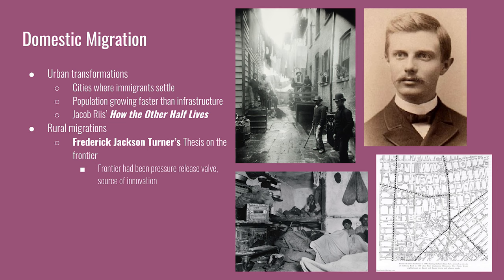Jacob Riis, an early reformer, wrote a book called How the Other Half Lives, which details conditions in the cities. In addition to the text, he includes photographs and illustrations of conditions in New York City. The two pictures on the screen of the alleyway and the tenement apartment are from Riis' book. Rural migrations were taking place toward frontier territory, made easier to access by the construction of railroads.